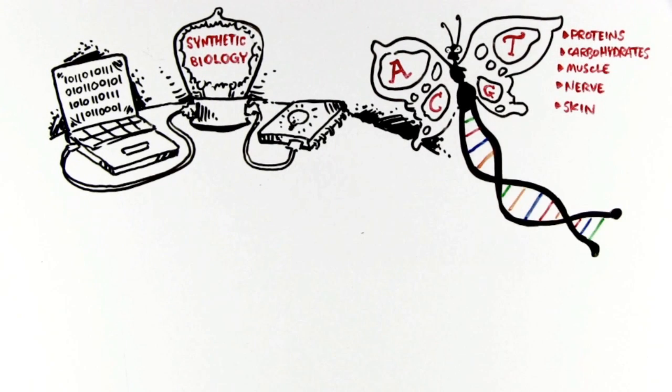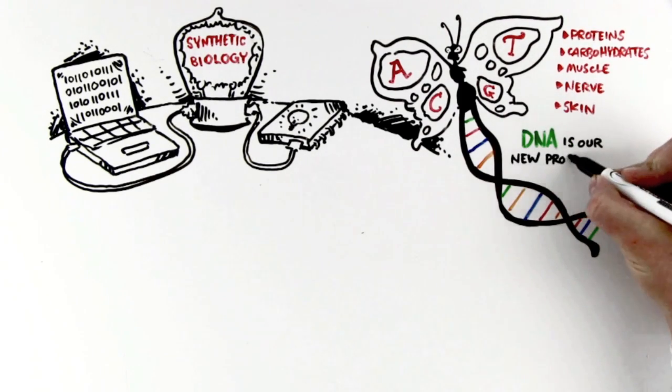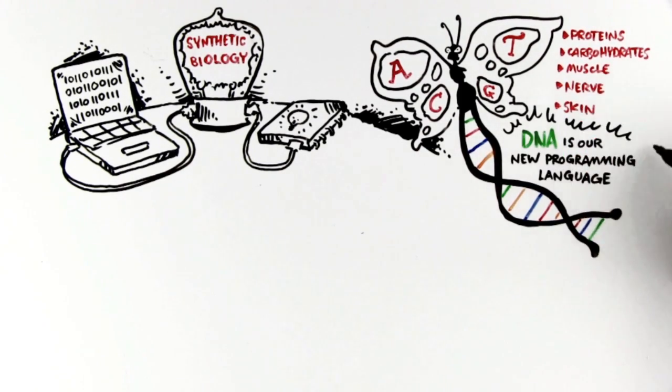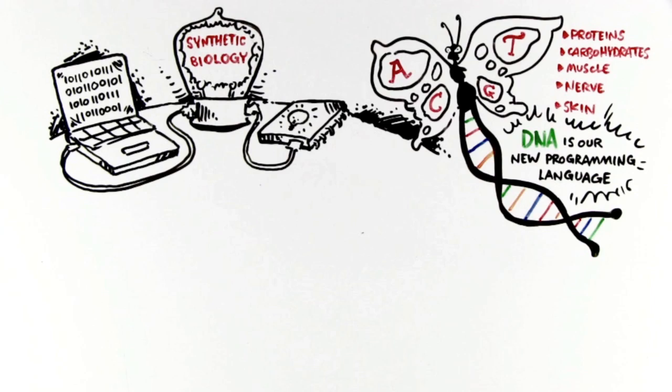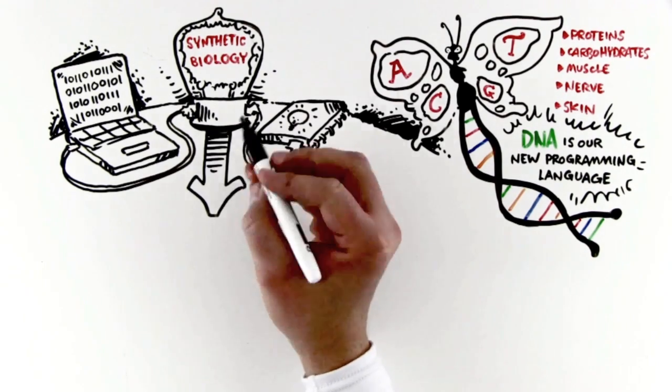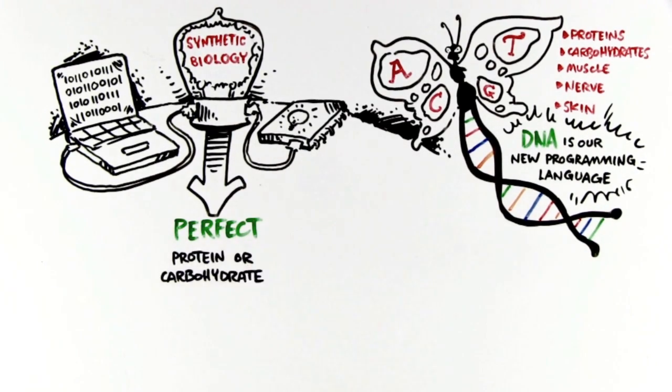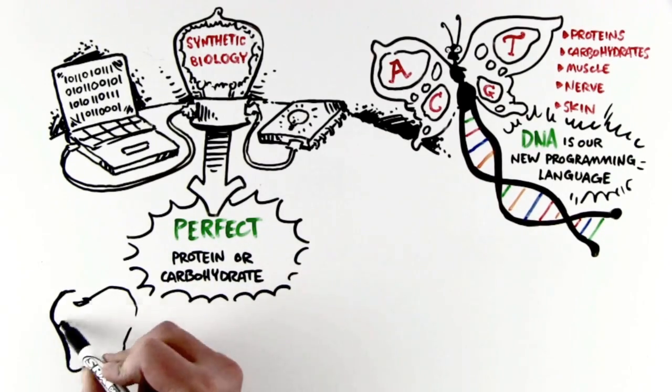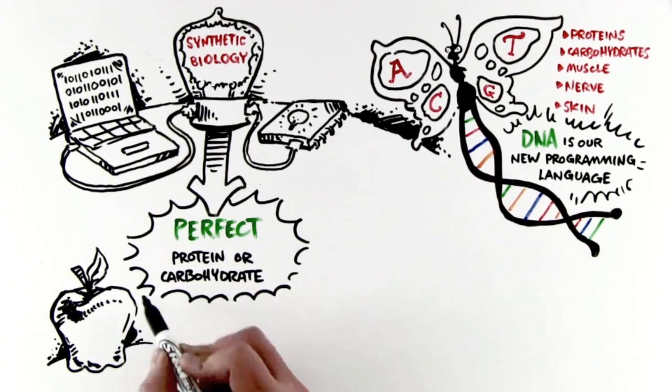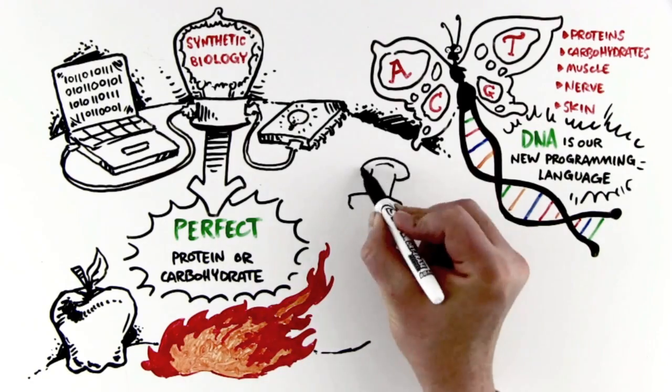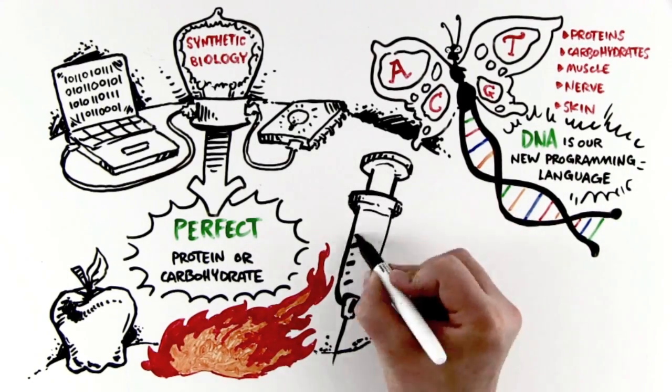Today, with the advent of synthetic biology, DNA has become our new programming language. Using infinite computing and AI, we can design a sequence of DNA that will direct a cell to manufacture the perfect protein or carbohydrate to be used for foods, fuel, or vaccines, far more tailored and efficient than ever before.